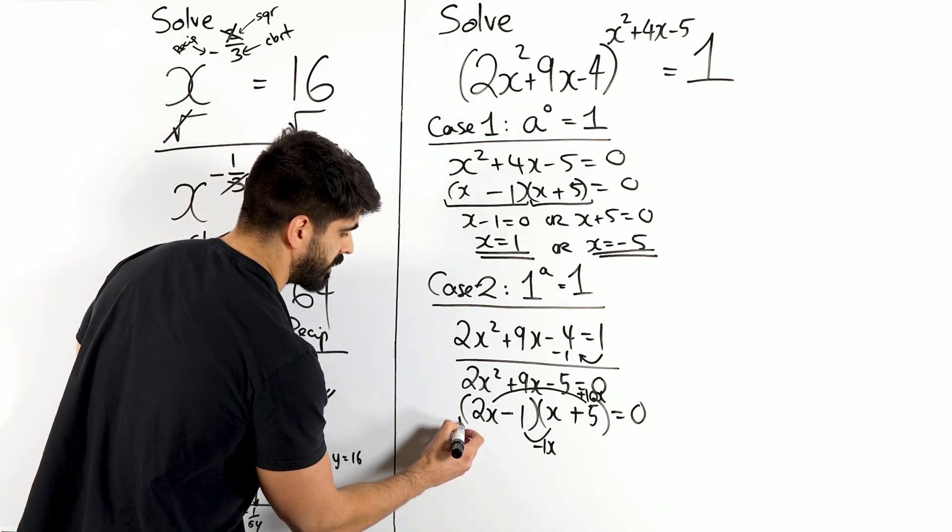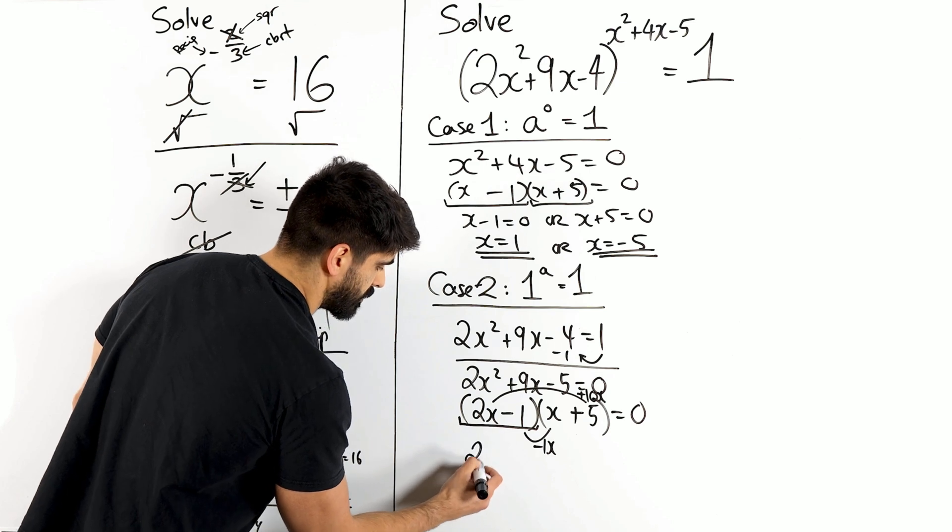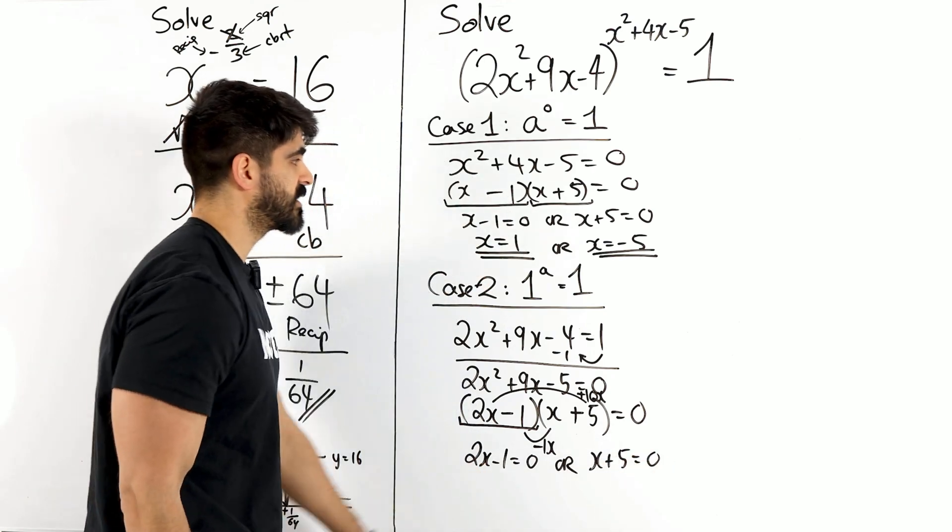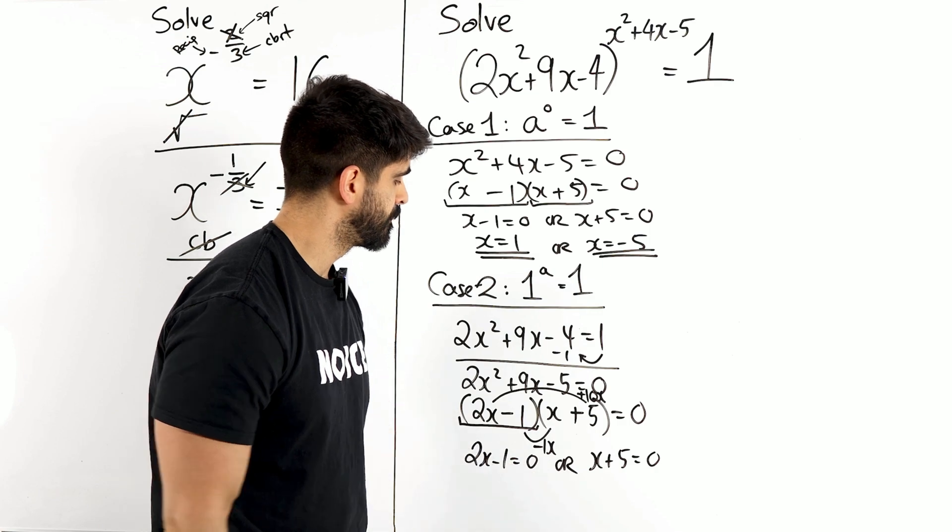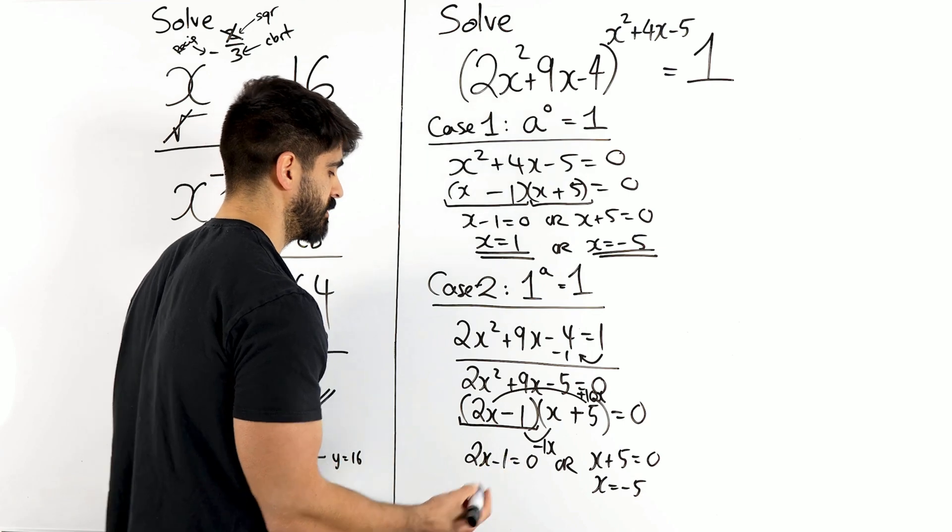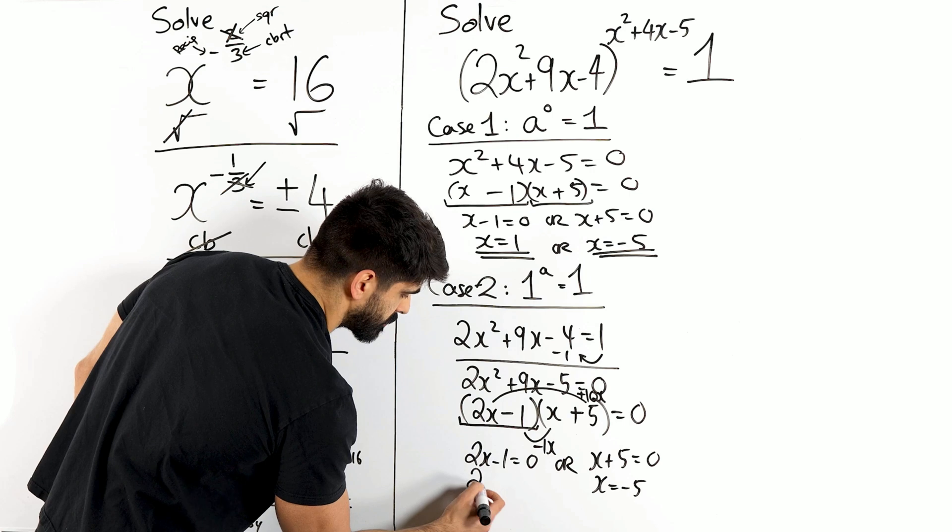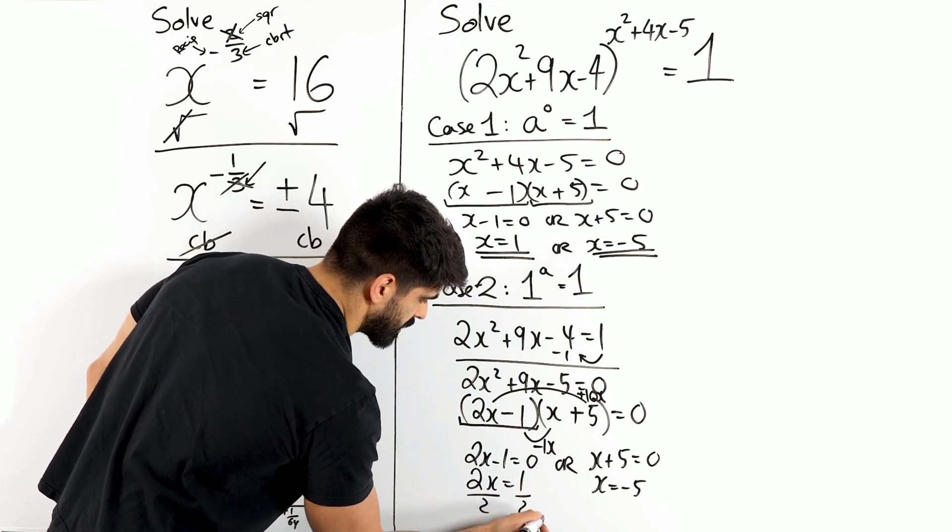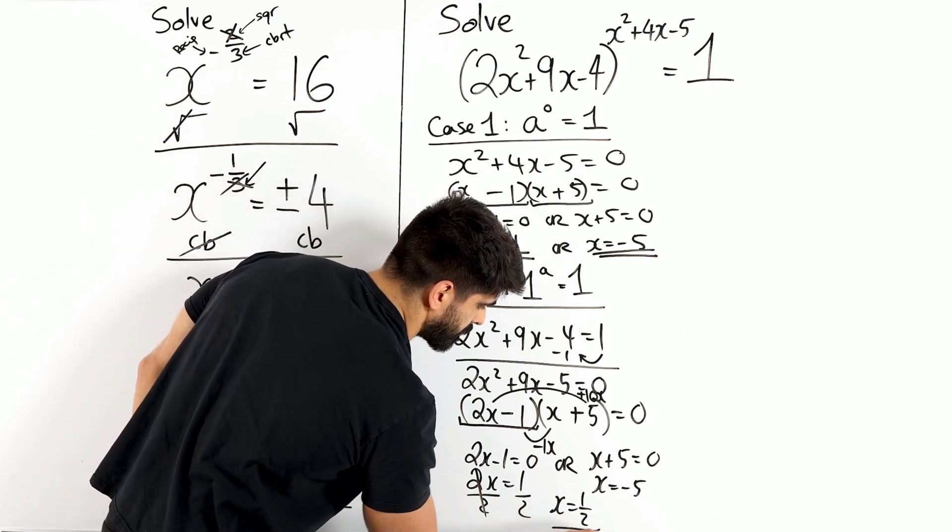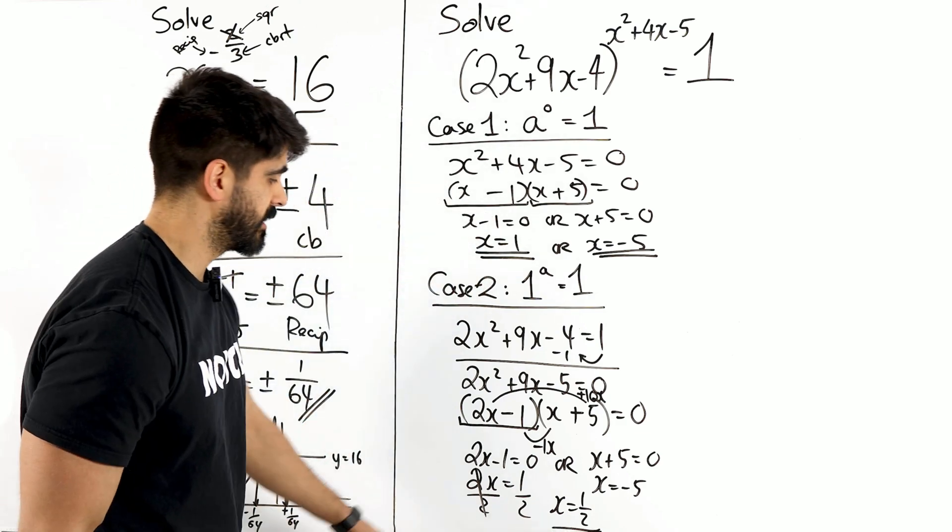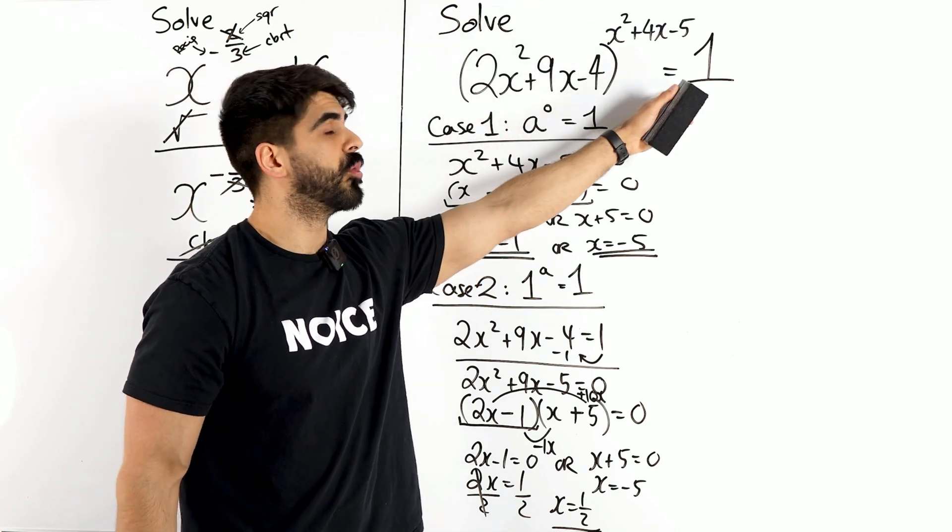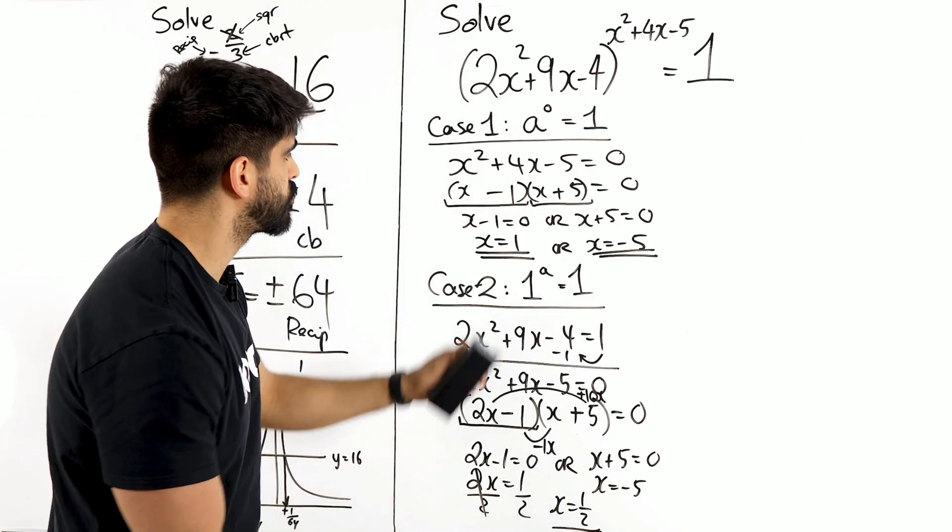So now, either 2x - 1 is zero or x + 5 is zero. Interestingly, this gives me the same value. So this is going to give me x is minus five, which you already have as a solution. Here, we're going to move the minus one over, so we get 2x is one, then divide both sides by two. And there's your other solution, x is one half. So we have three solutions here. Half, one, minus five, to ensure that this will always equal one. Very interesting question.